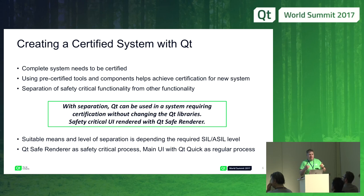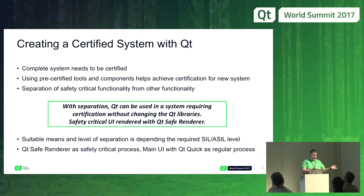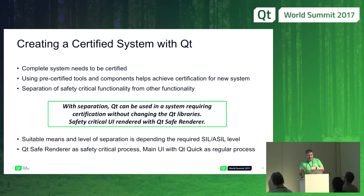Sometimes the standards might set the framework, and sometimes local legislation might set the framework for what is safety critical. At the end of the day, it's you as the creator of a system who needs to make it safe. You isolate the safety-critical functionality from the other functionality. You can use Qt freely in the other functionality without any certification requirements to Qt framework libraries. The safety-critical UI you can render with the Qt Safe Renderer. You also need to make sure that the non-safety-critical part does not interfere with the safety function from operating.